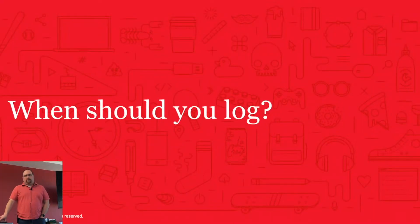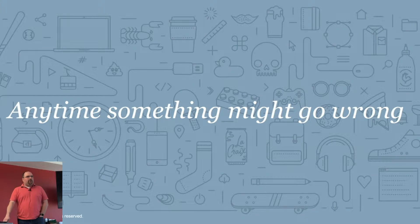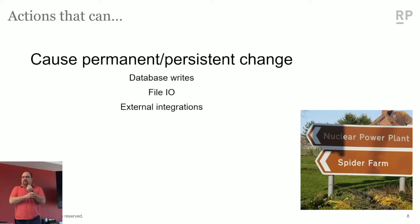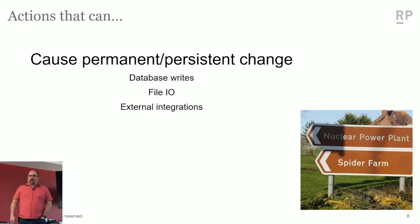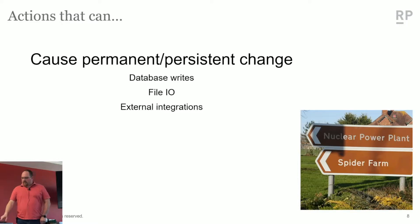So when should you be logging? Anytime something might go wrong. I know what you're probably thinking - my code is great, what could ever possibly go wrong? But something can always go wrong. Here are some ideas of when it might happen - things you should always be looking for as areas to log. Anything that can cause persistent, permanent change: database writes, writing to files, anything with external integrations. These are great cases where you should be looking to log what's going on.